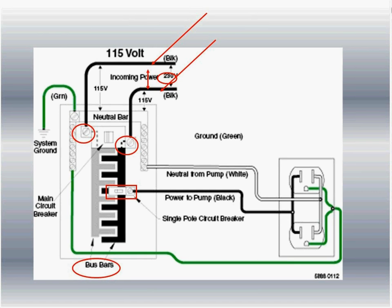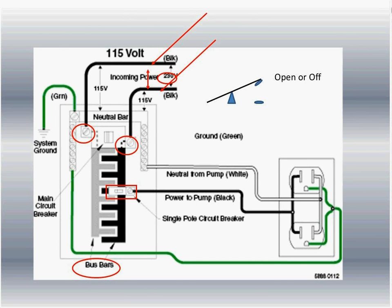Single throw — if you look in the upper right-hand side of that picture, a throw is nothing more than a switch. When it is closed, it's on — it's allowing the flow of electricity. When that switch opens up, it turns the electricity off, stops the flow. So that's basically what single throw means — it's either on or off, closed or open. Typically it's going to be closed, so we're going to get power to go down the black wire.